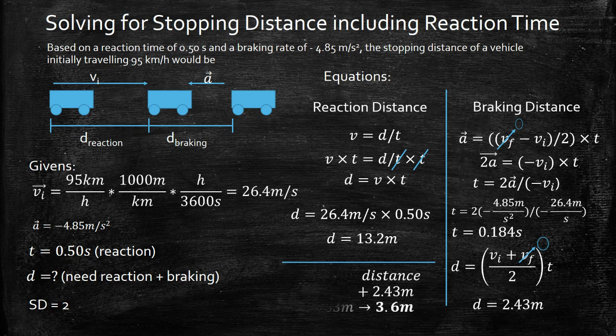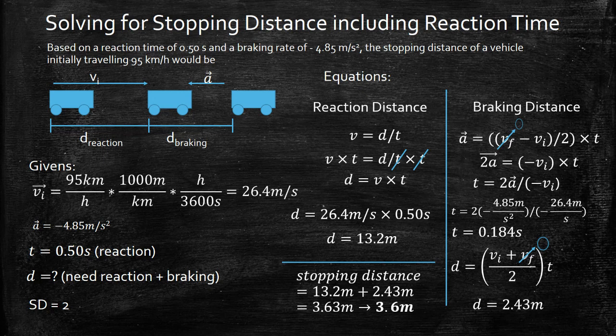Our last step is just to add both of our distances together and now we're going to get our total stopping distance and check our sig digs. Our final answer is going to be 16 meters. Hopefully this helps. Thanks for watching.